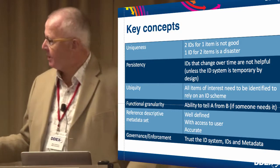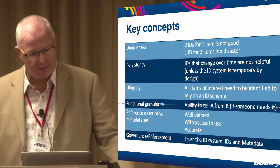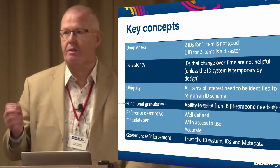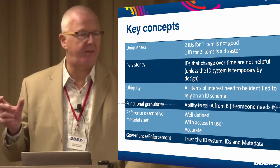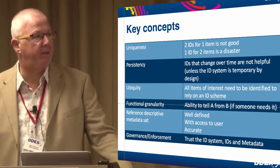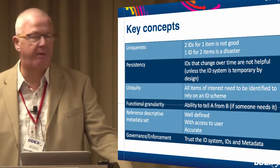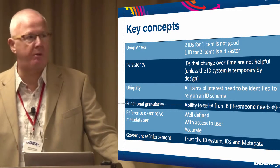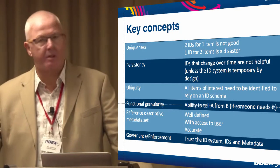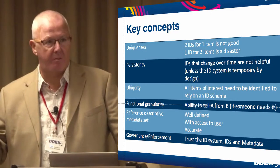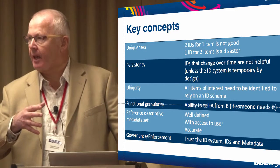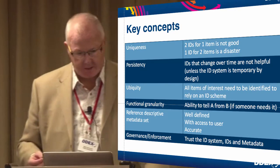Another very important aspect of a decent unique identification system is that it needs reference descriptive metadata. It's no good just having the identifier — you've got to have an agreed reference descriptive metadata that applies to every identifier. As Jose will point out, with ISWC there is a fixed number of fields that have to be completed before an ISWC gets allocated. Without it, the thing doesn't make any sense.